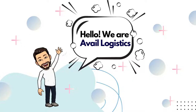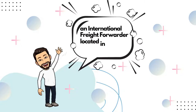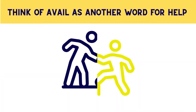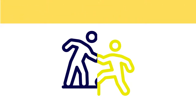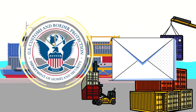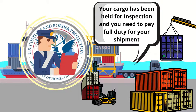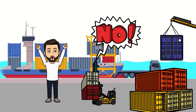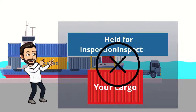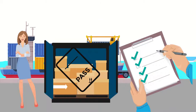Hello. We are Avail Logistics, an international freight forwarder located in Southern California, USA. Think of Avail as another word for help. Have you ever received a letter or a call from Customs Border Protection notifying you that your cargo has been held for inspection and you need to pay full duty for your shipment? No? Then consider yourself in the safe zone. In this video we will show you how to deal with this issue in case you encounter it in the future. It will surely help you have a greater profile with CBP when importing cargo overseas to the USA.